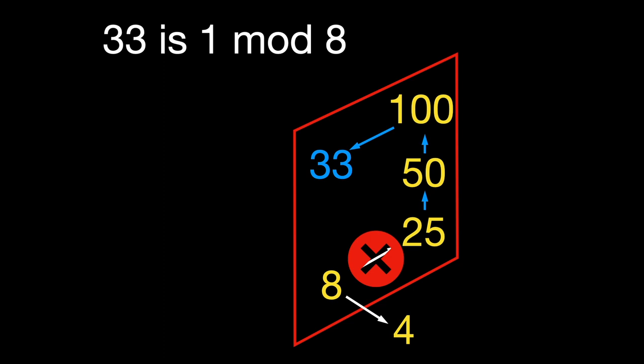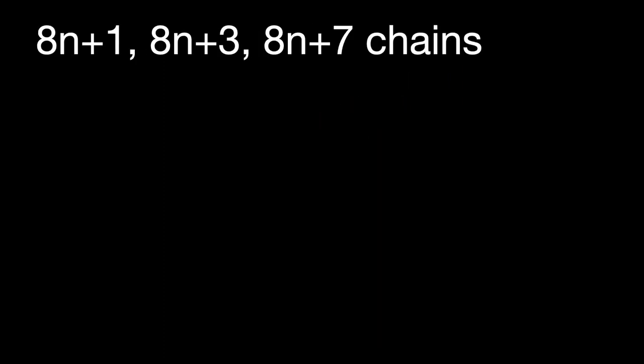All numbers in a Collatz chain, other than the first one, need to be in the form 5 mod 8.